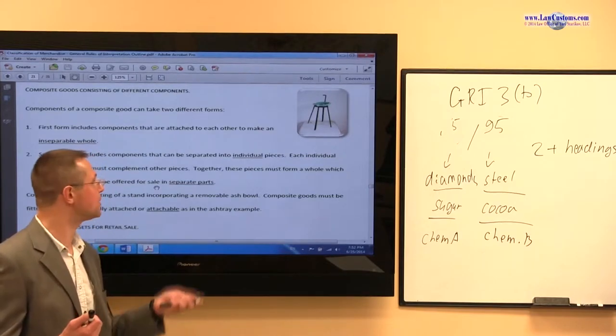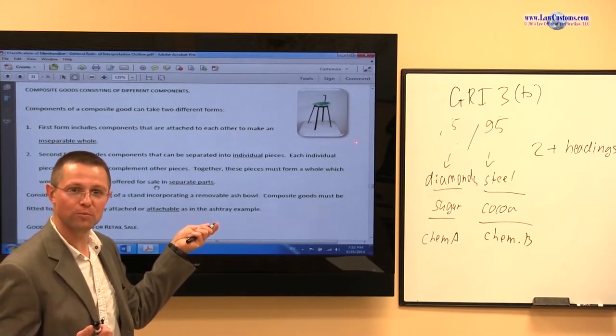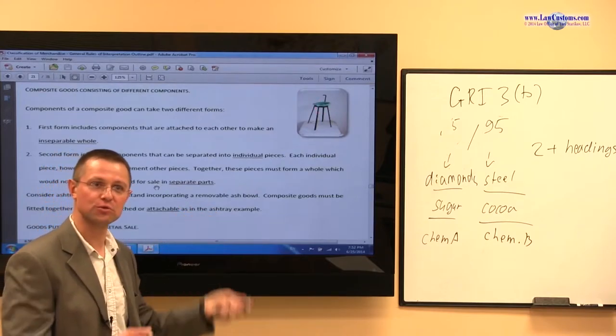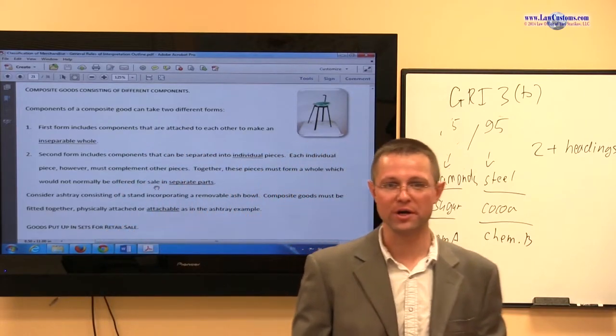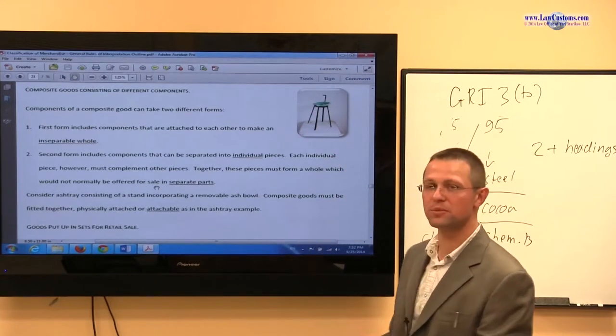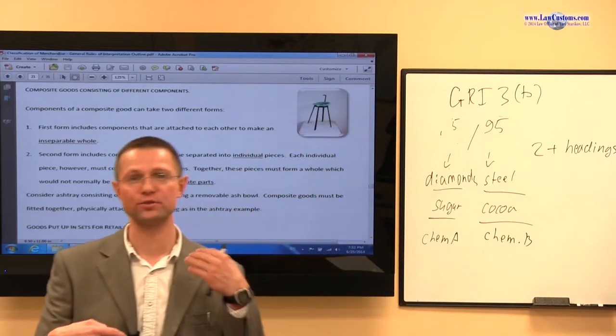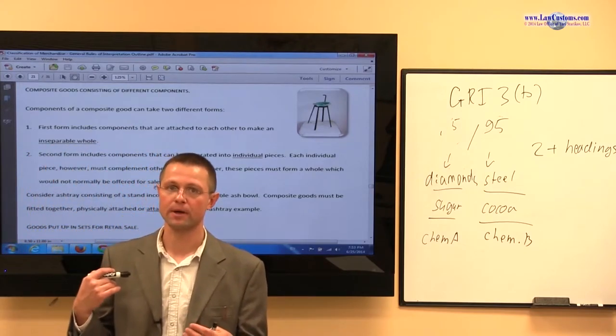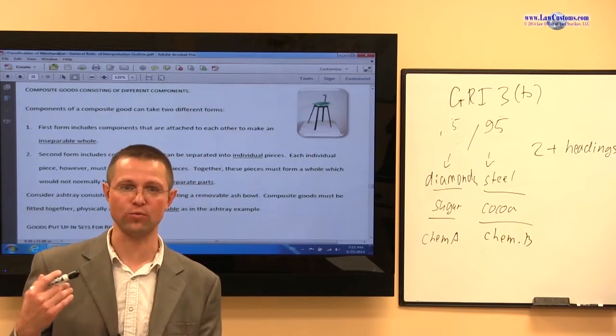What type of analysis here would you go through? Well, you cannot use GRI-3A because you have a part of metal and a part of ceramic. So you have a prohibition against the rule of relative specificity. So the next step would be to say, yes, because it is a metal, it is classifiable in one heading. It is also put as an article of steel, let's say, if it's steel or brass, if it's copper, right? It can also be classifiable as ceramic article. What's more important?